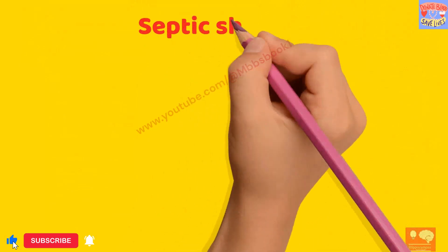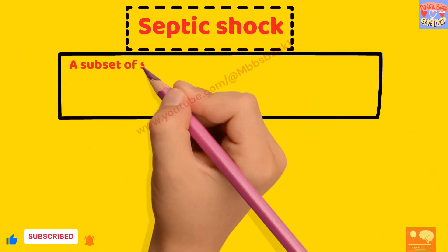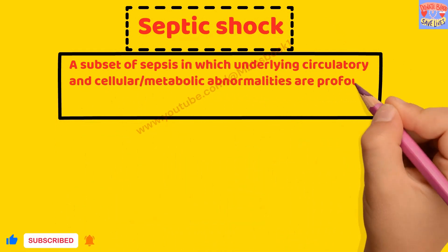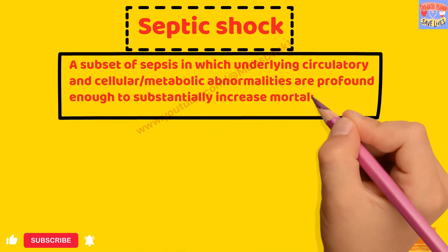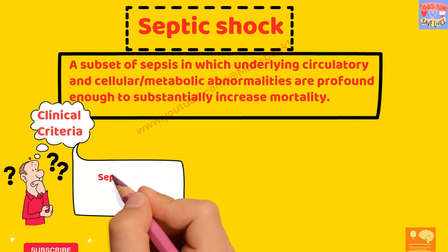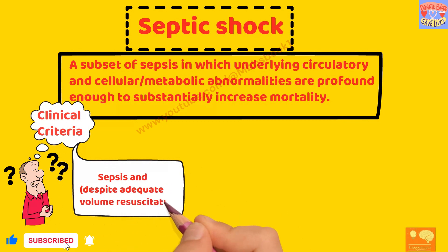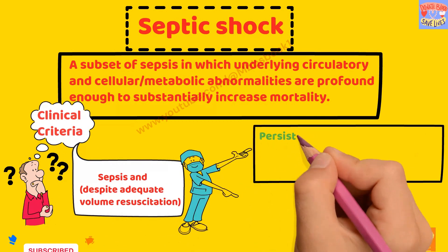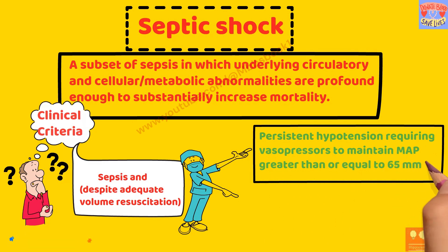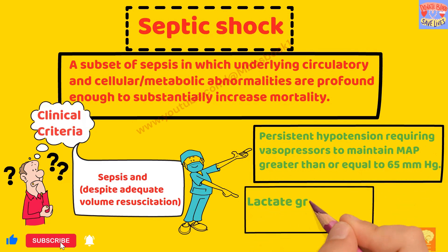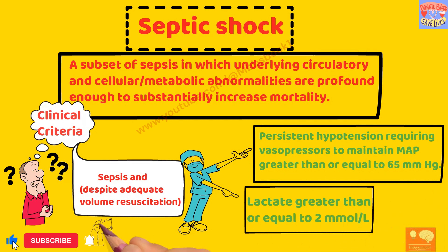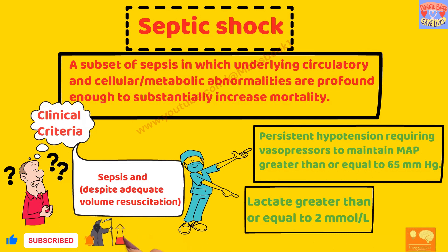Septic shock, according to Sepsis 3.0, is a subset of sepsis in which underlying circulatory, cellular, or metabolic abnormalities are profound enough to substantially increase mortality. The clinical criteria for septic shock is: sepsis and, despite adequate volume resuscitation, persistent hypotension requiring vasopressor to maintain mean arterial pressure greater than or equal to 65 mmHg, and lactate greater than or equal to 2 mmol per liter. With these criteria, hospital mortality is in excess of 40%.